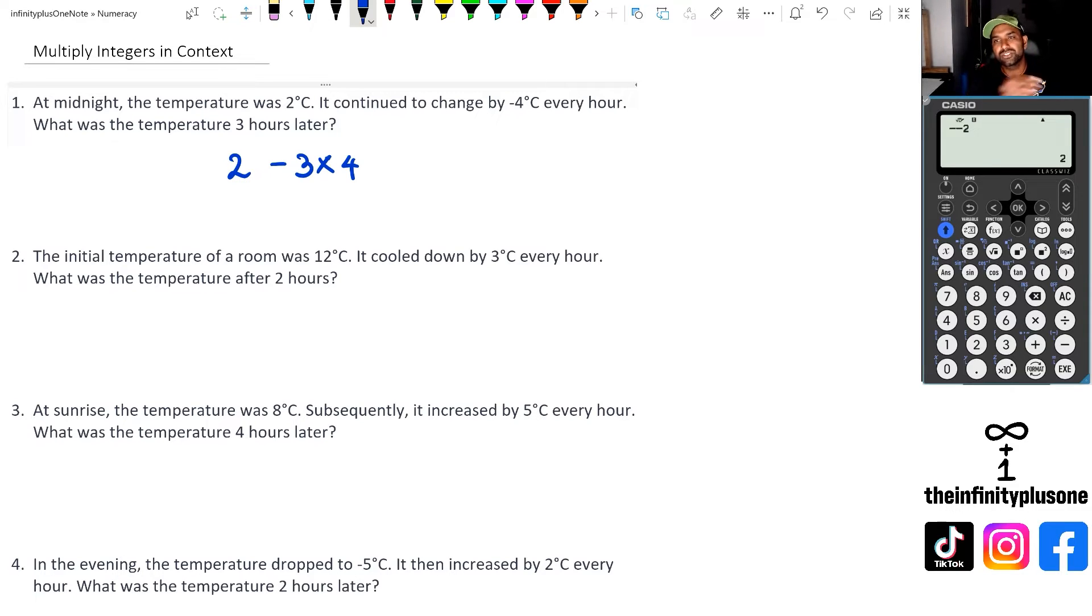Because if you think about it, you're losing four degrees every hour but we're looking at a temperature after three hours. So after three hours, you've actually lost minus 12 degrees and the way I get that is from the calculator where I go negative three times four.